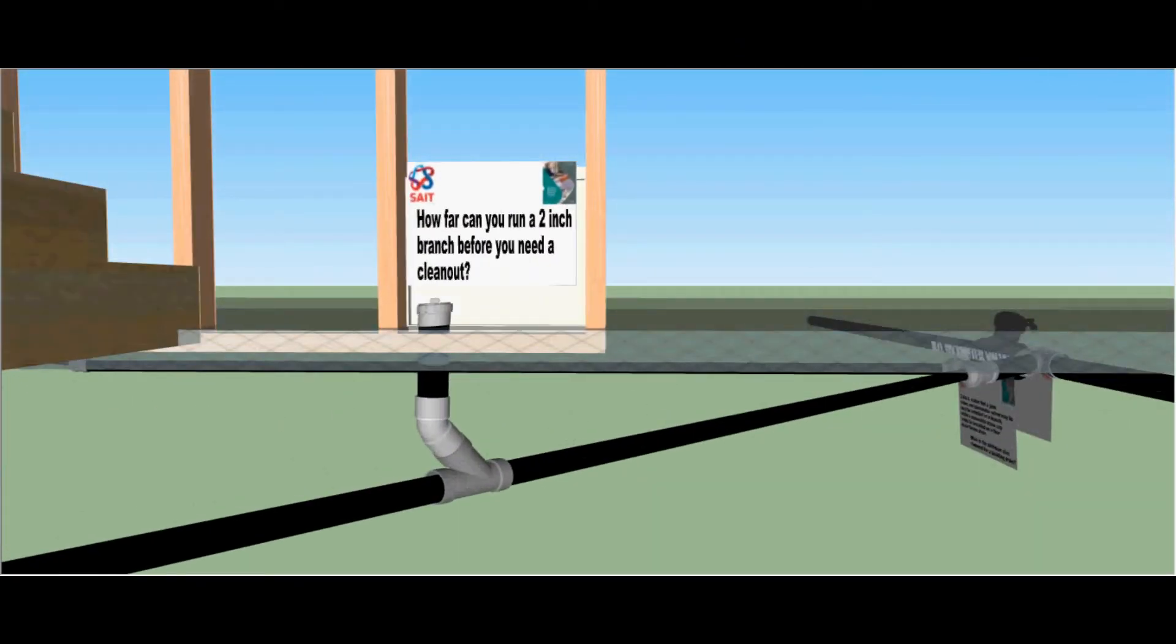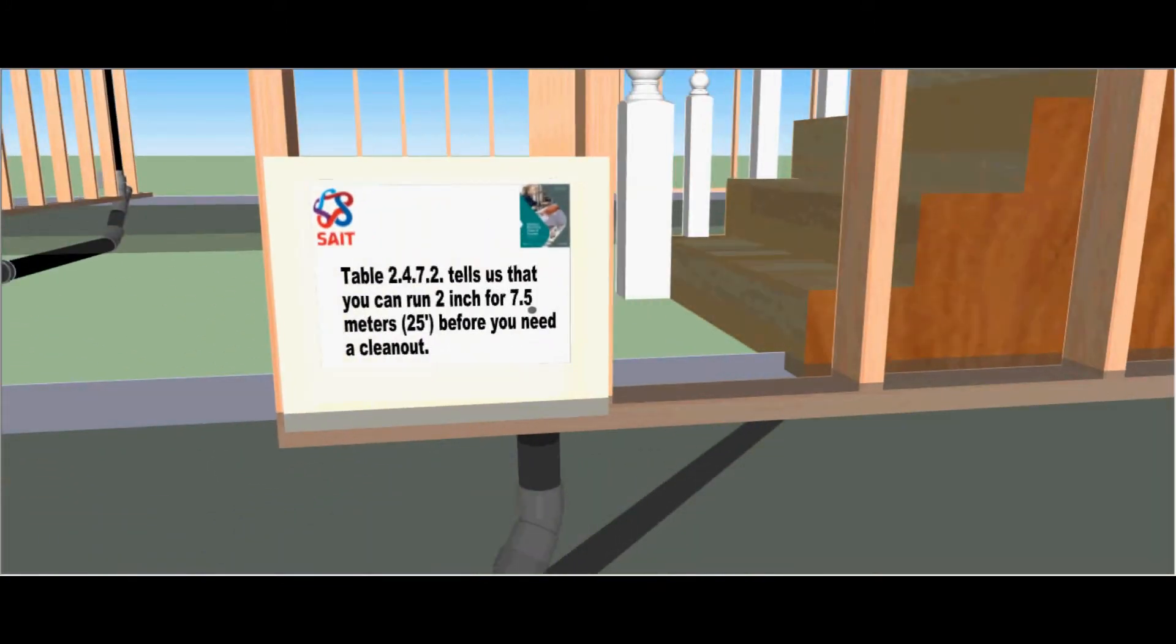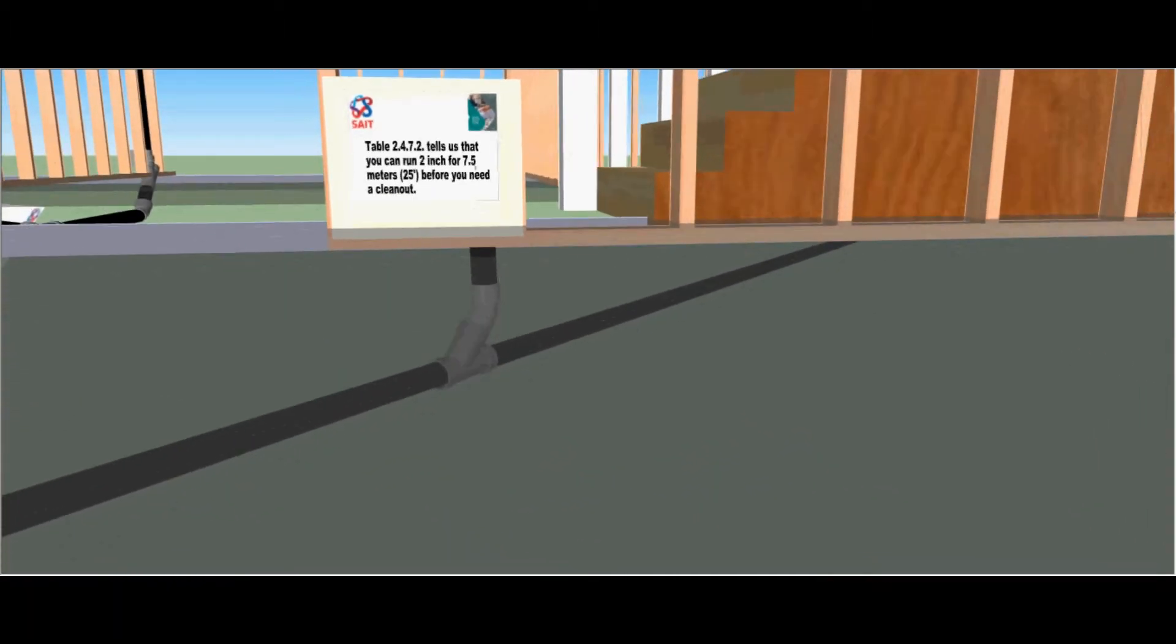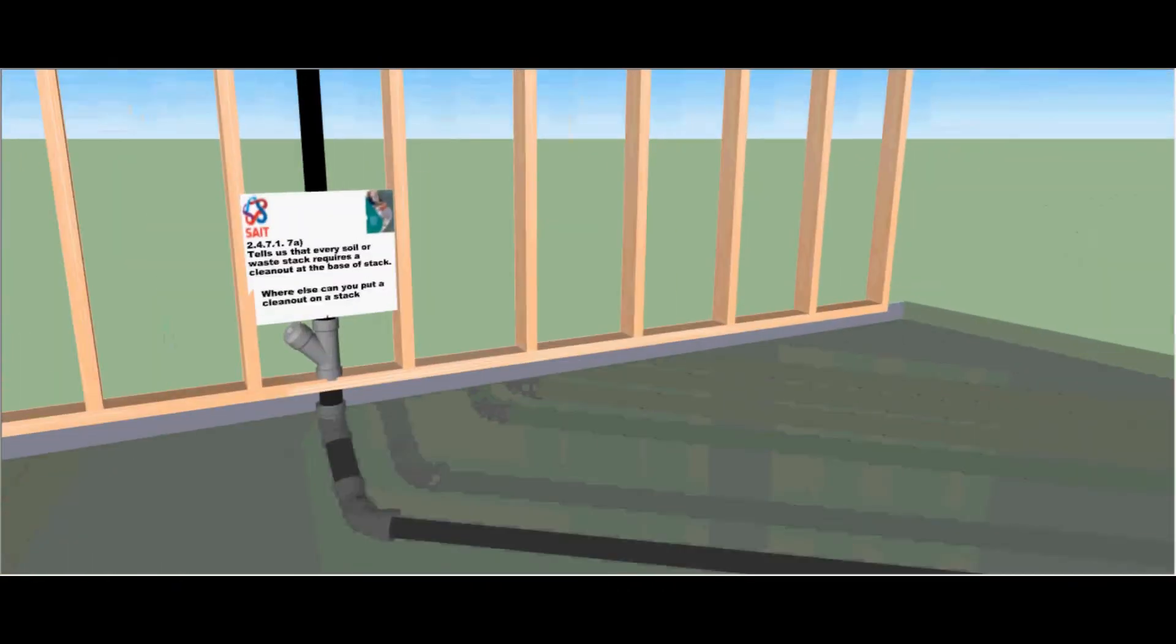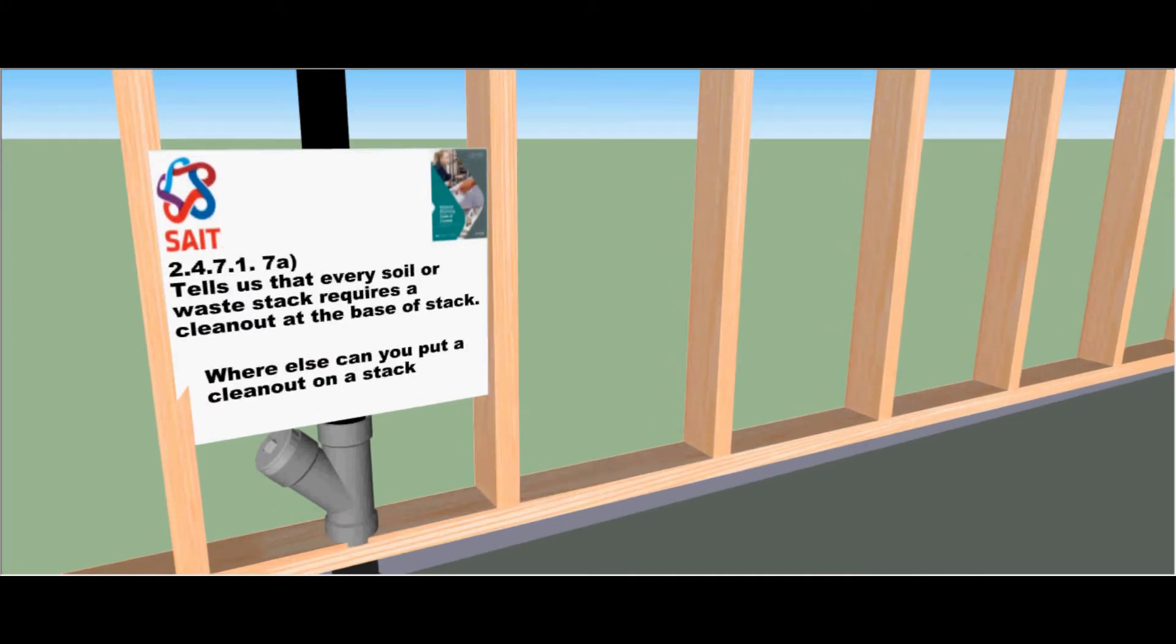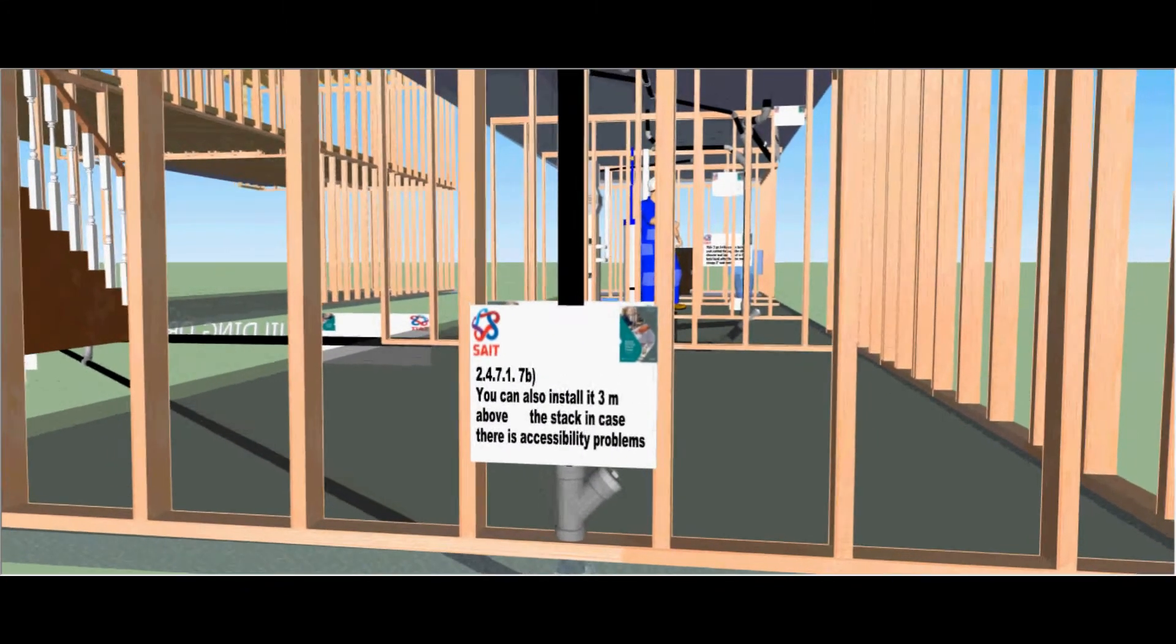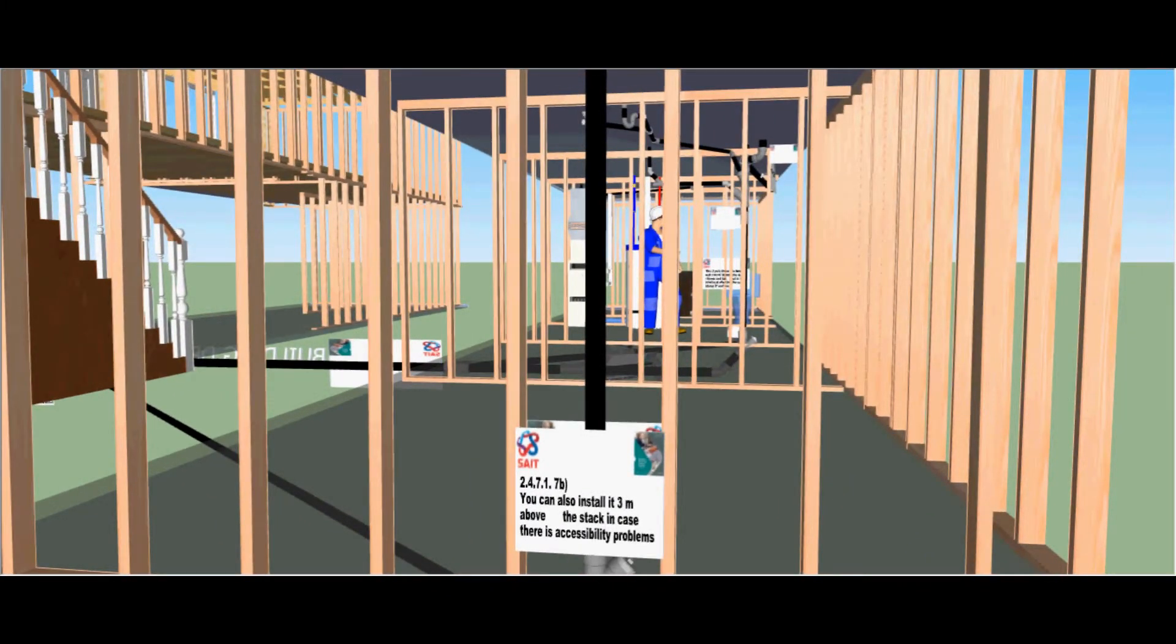How far can you run a two inch branch before you need a clean out? Table 2472 tells us that you can run a two inch for 7.5 meters or 25 feet before you need a clean out. This is found in one way riding. Clause 2471 tells us that every soil or waste stack requires a clean out at the base of the stack. Where else can you put a clean out on a stack? You can also install it three meters above the stack in case there are accessibility problems. It also tells us in clause 2471-7B.